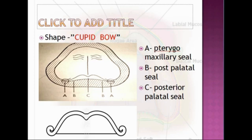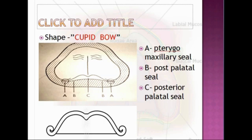The attachment of soft tissue to the posterior part of the bony hard palate is the true junction between the hard and soft palates. During functional movement, vibration takes place slightly posterior to this true junction — this is called the vibration line. The area between the true junction and the vibrating line is soft and compressible, and hence the posterior palatal seal is placed in this part. The posterior palatal seal area lies between the anterior and posterior vibrating lines.